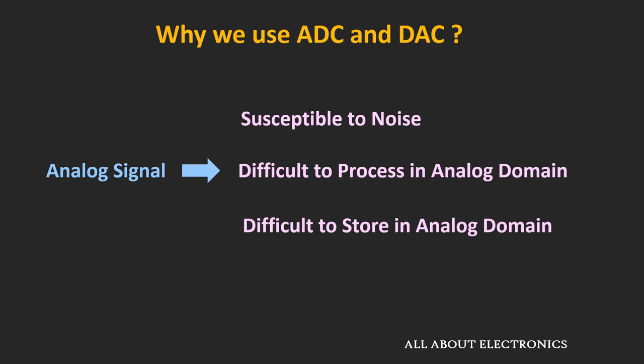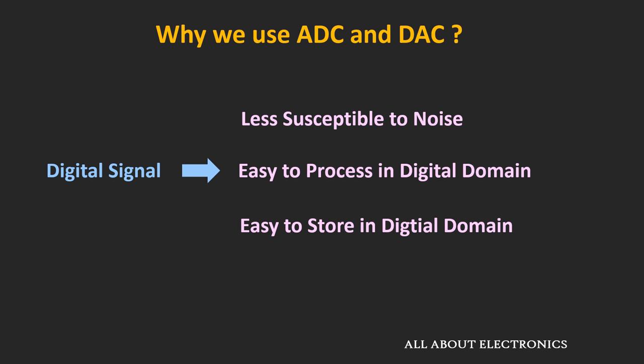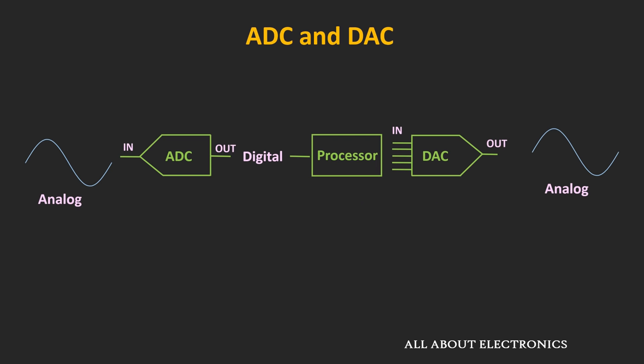Analog signals are very susceptible to noise, particularly in communication. Apart from that, it is very difficult to process and store analog signals. On the other hand, digital signals are less susceptible to noise and are easy to process and store. That is why analog signals are converted into digital signals so that they can be easily processed and stored, and whenever required, using the DAC, it is possible to retrieve these signals.